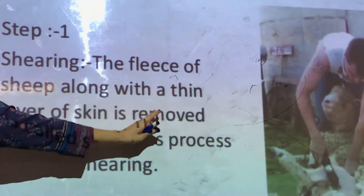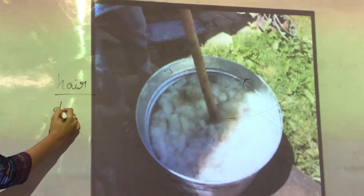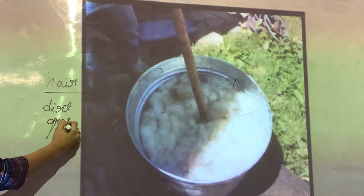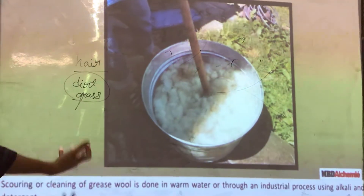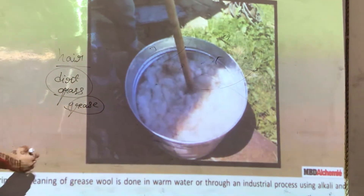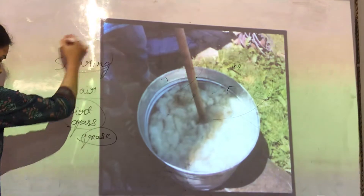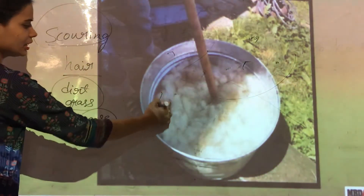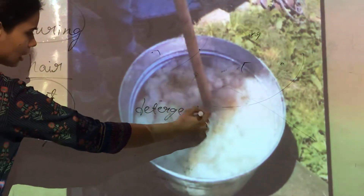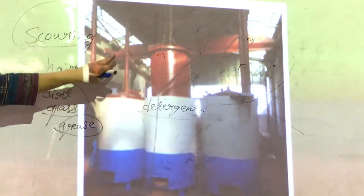The sheared skin from the sheep is thoroughly washed in tanks to remove grease, dust, and dirt. The hair we get from sheep has so much dirt and grass since sheep are all over the grass — they eat grass, they are herbivores — and they also have grease. So we need to remove it first. This process is known as scouring — S-C-O-U-R-I-N-G — and for that we use detergents and other chemicals to get rid of dirt, grease, and grass. Generally, this process is done in factories.